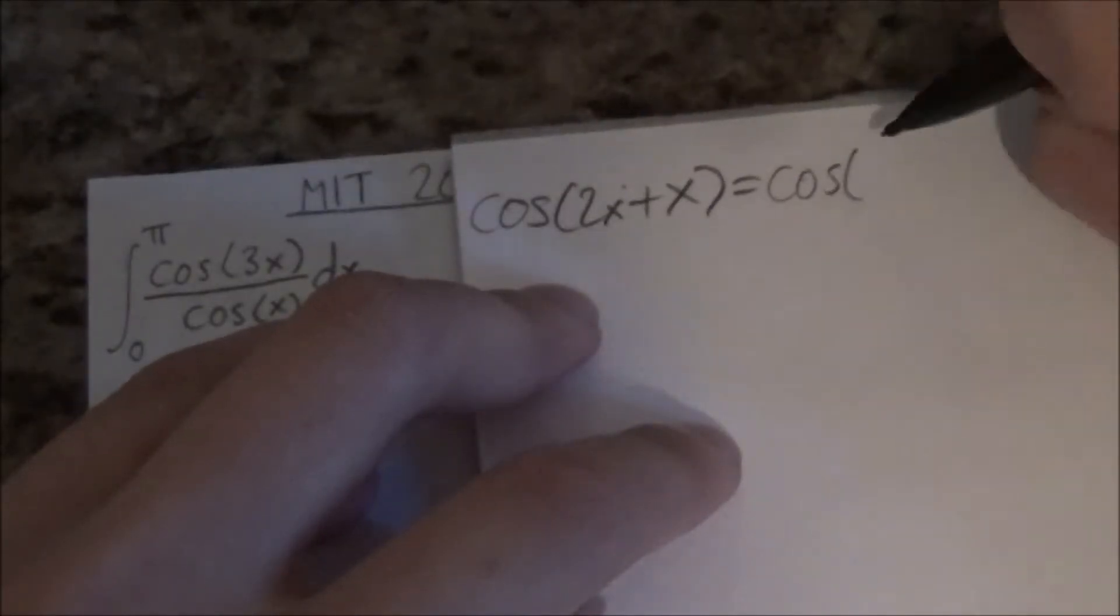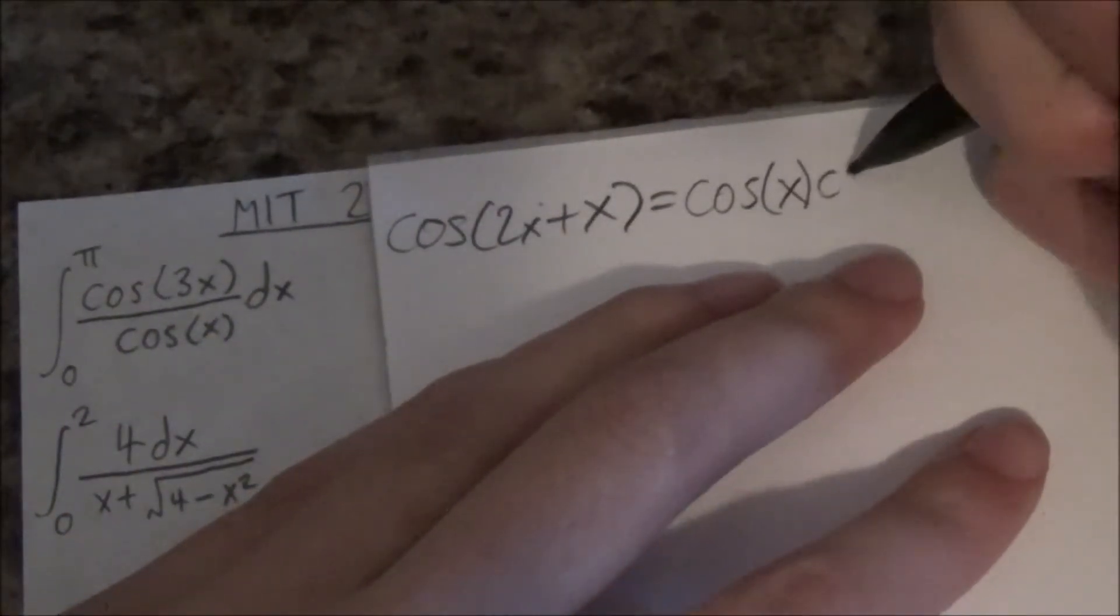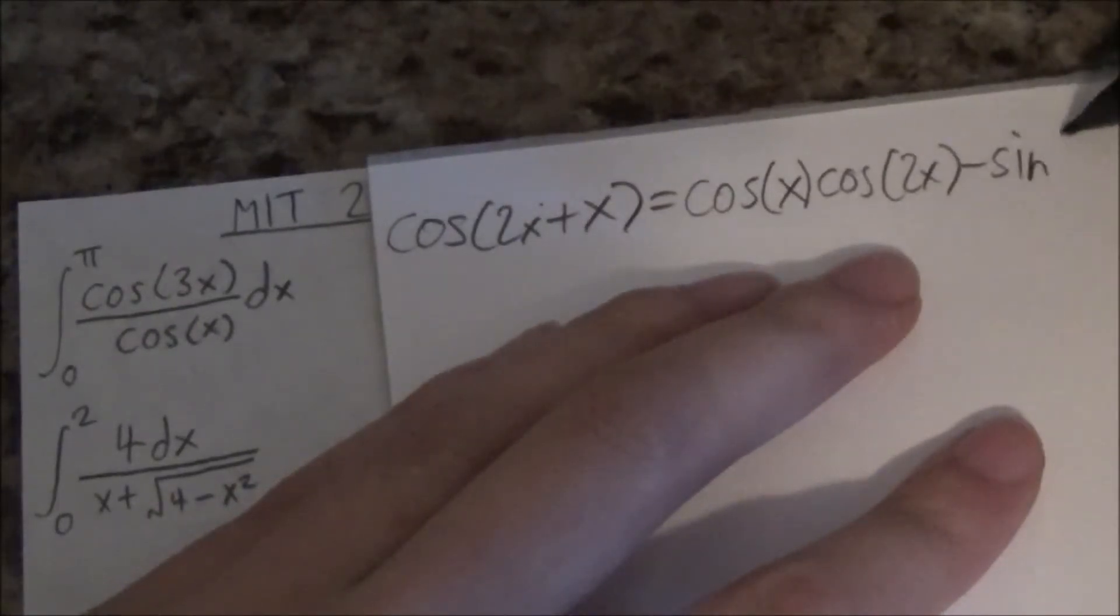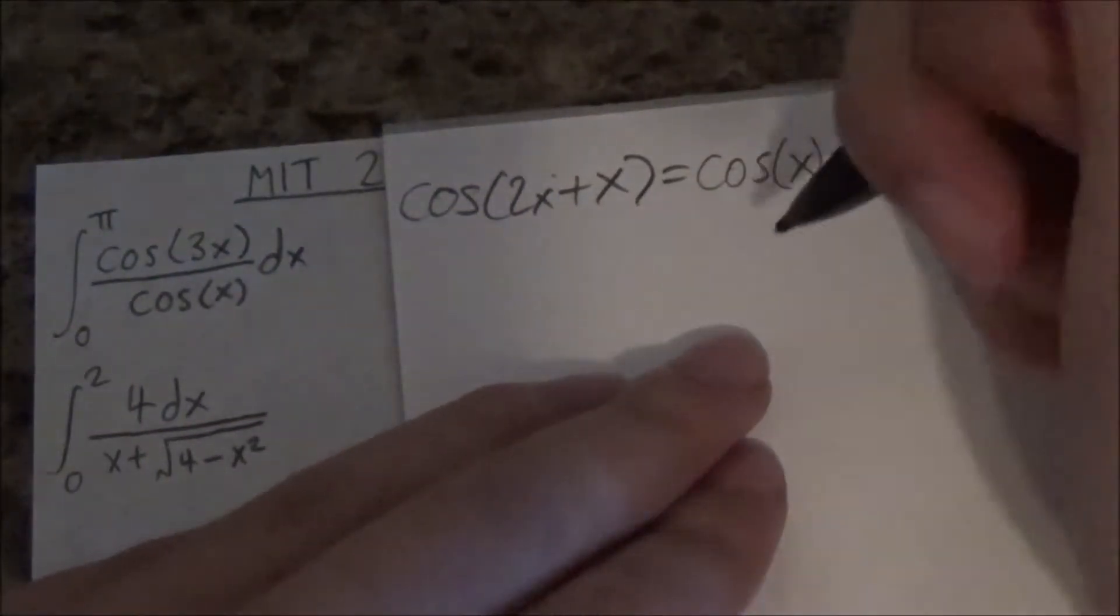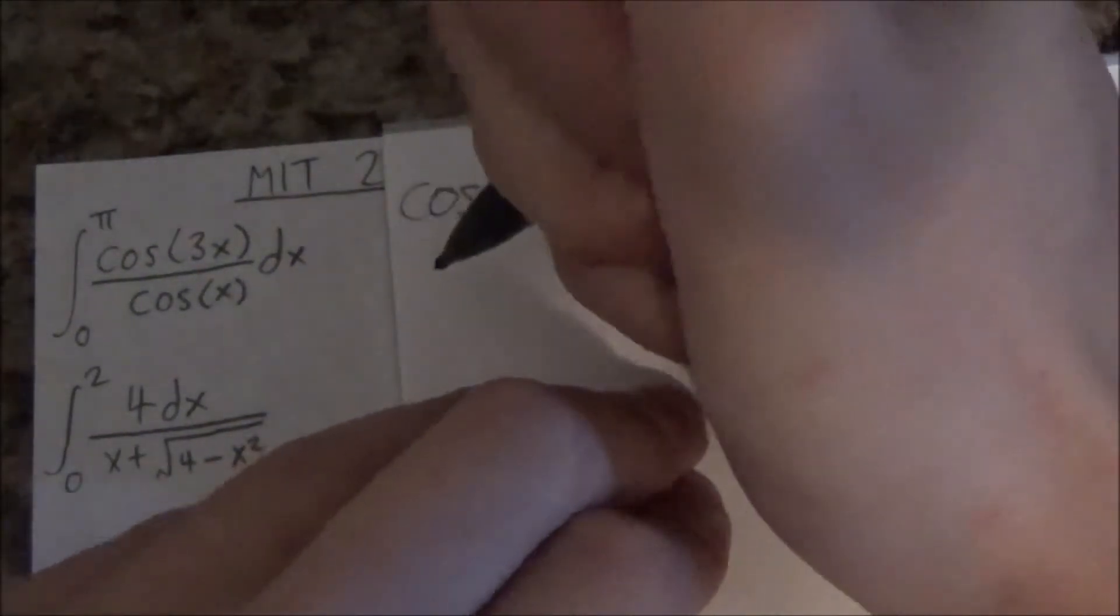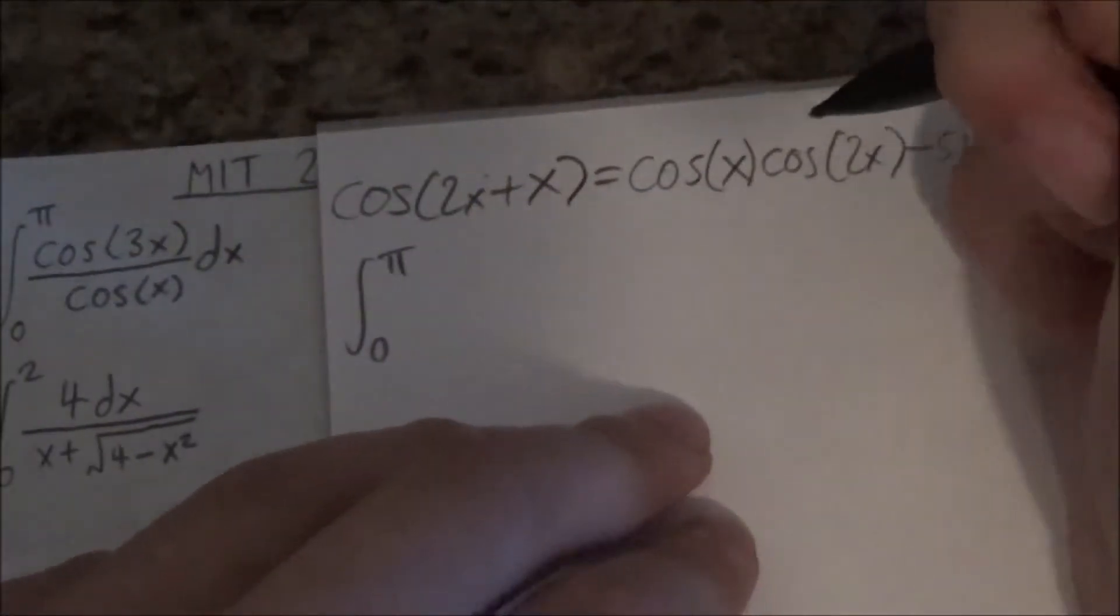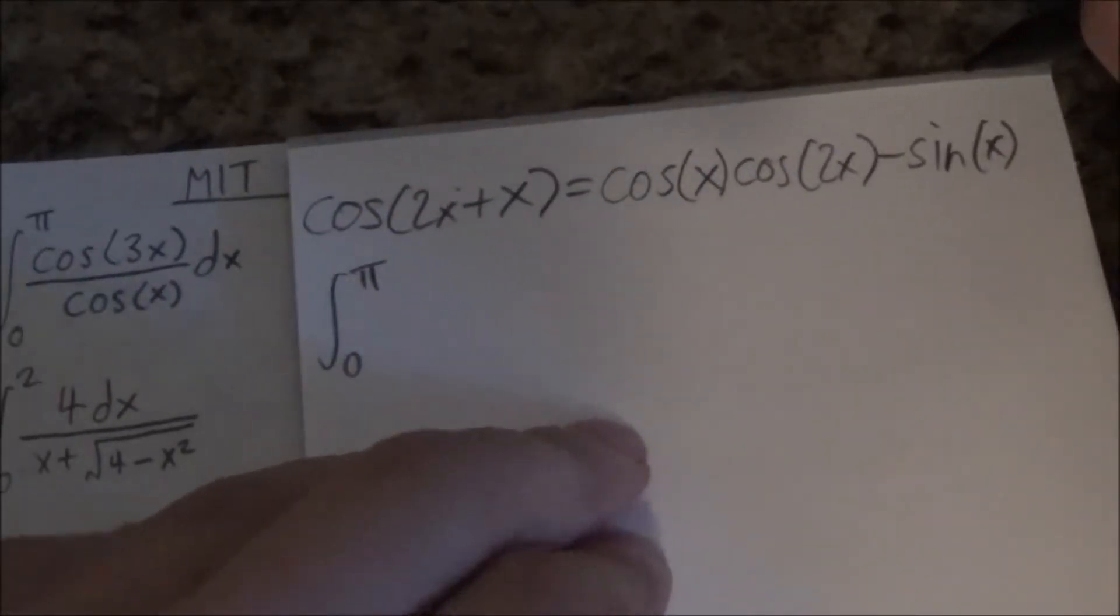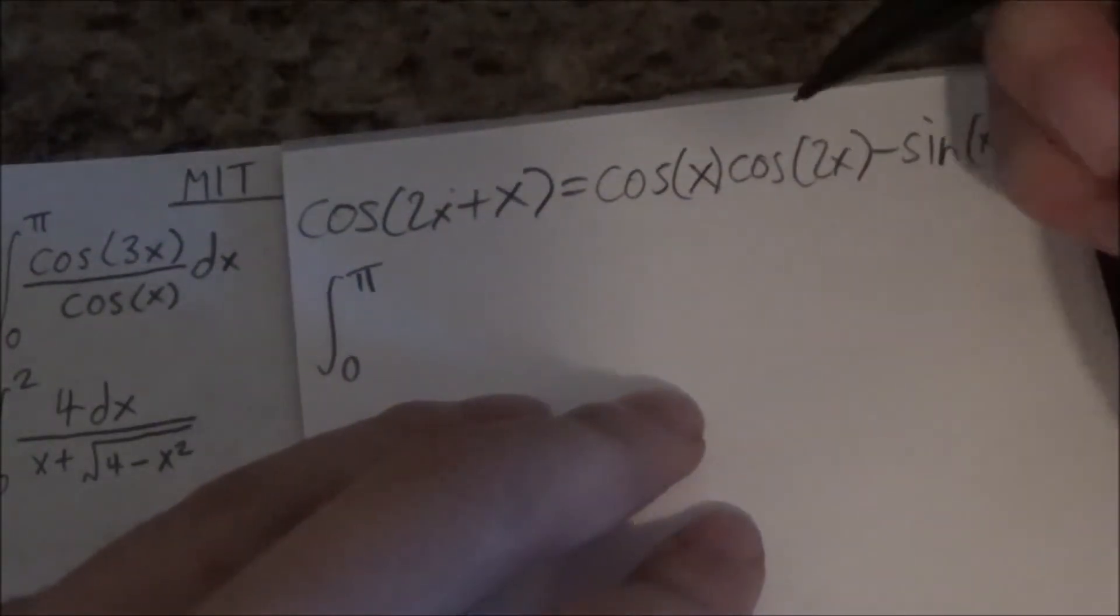Maybe this could be, let's see, cosine... And I think the operations flip. Oh, okay. Well, yeah, you know where this is going. So this becomes... I really hope this is correct, though.